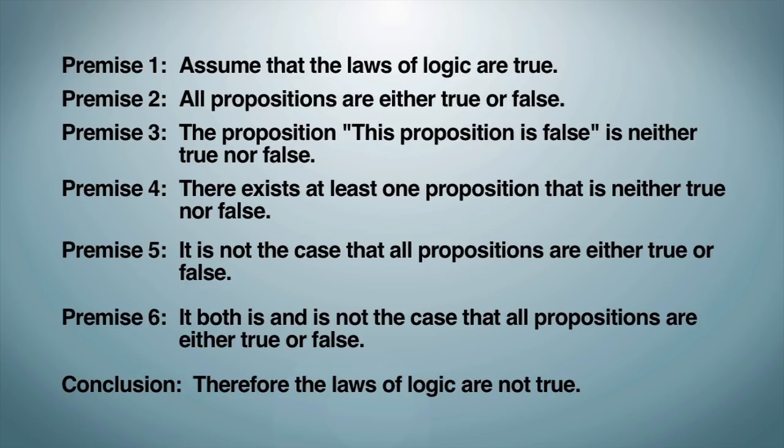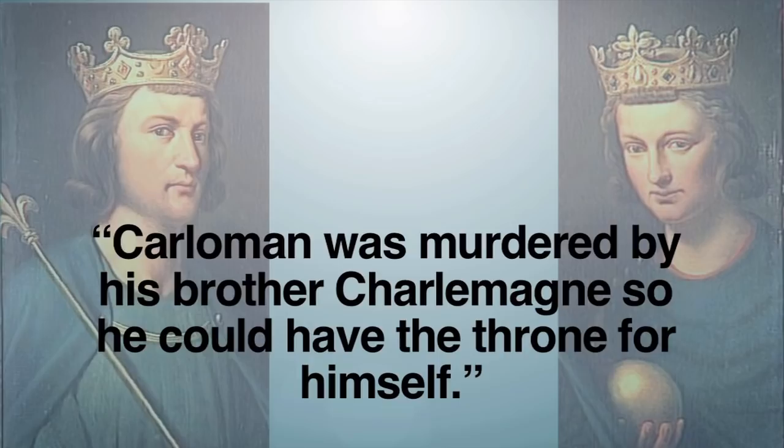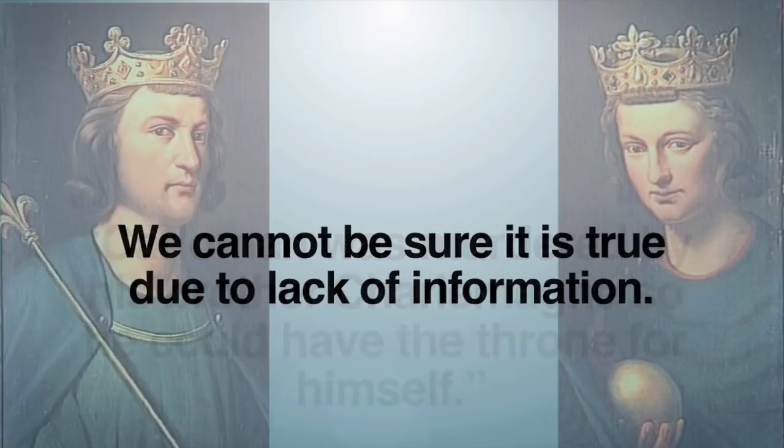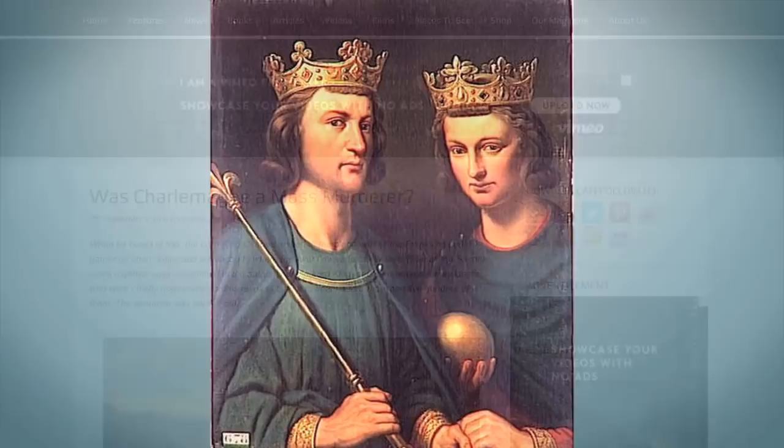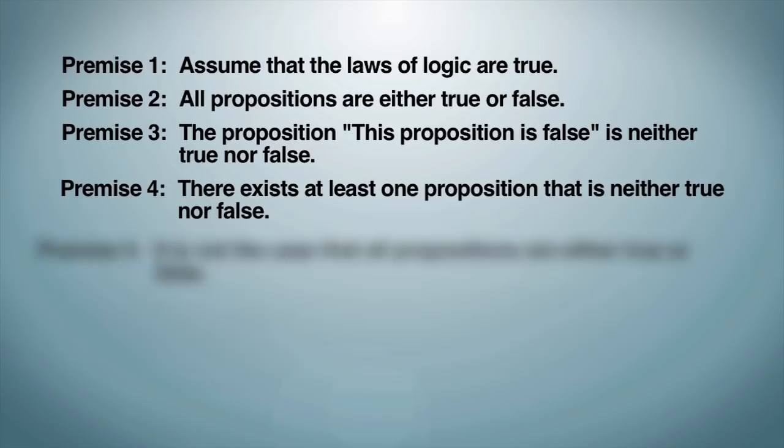Building on that, let's consider also this statement: Charlemagne was murdered by his brother so he could have the throne for himself. This statement is either true or false, however, we cannot be sure if it is true due to lack of information. We do not have enough records or evidence to confirm whether or not Charlemagne was murdered or died naturally. It is simply beyond the scope of our knowledge today.